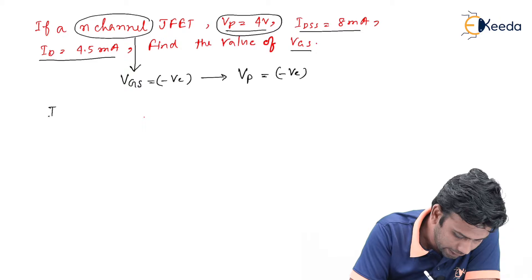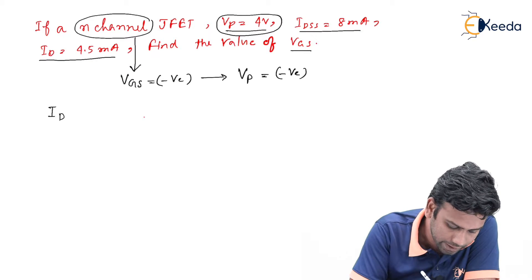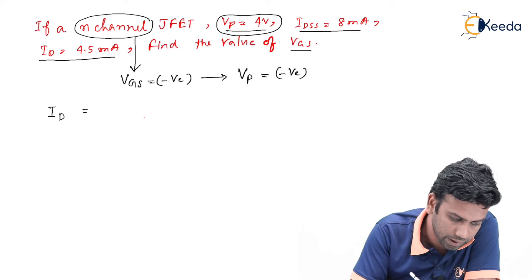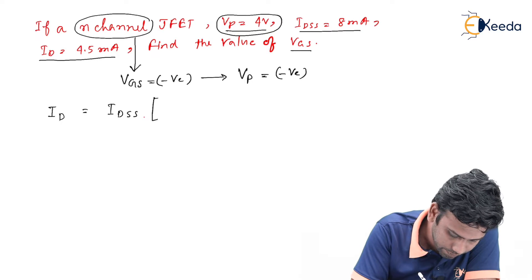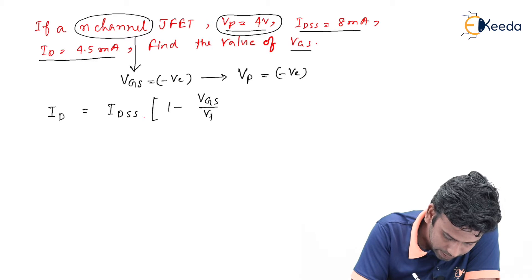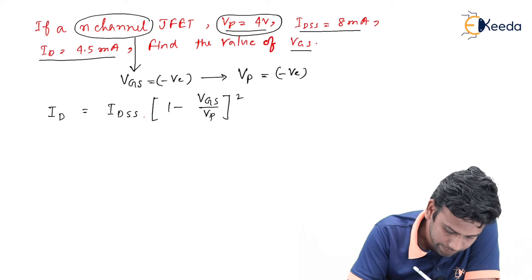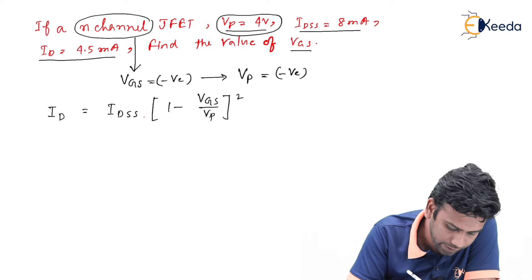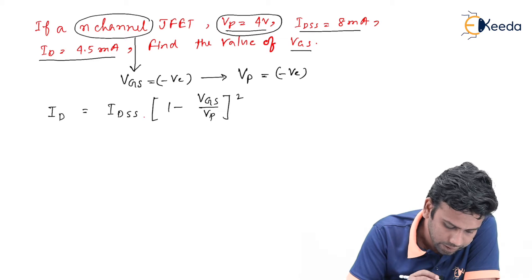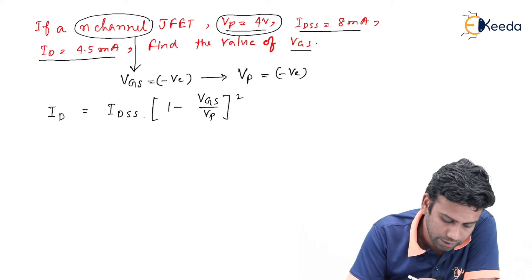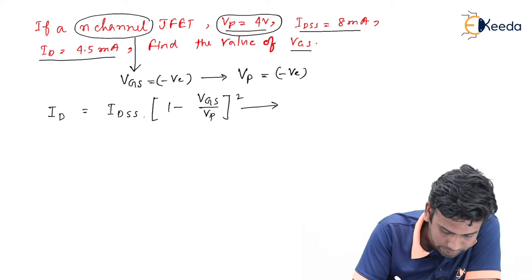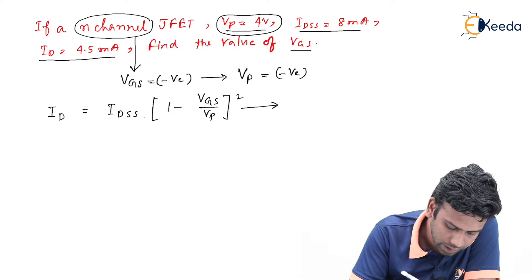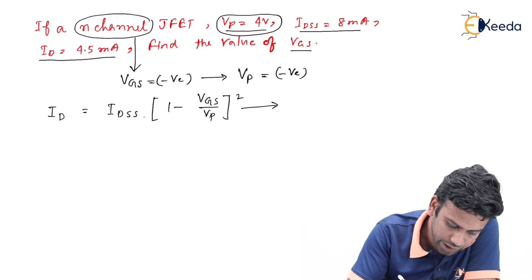We know that ID can be written using Shockley's equation, and the equation is IDSS times 1 minus Vgs by Vp whole square.